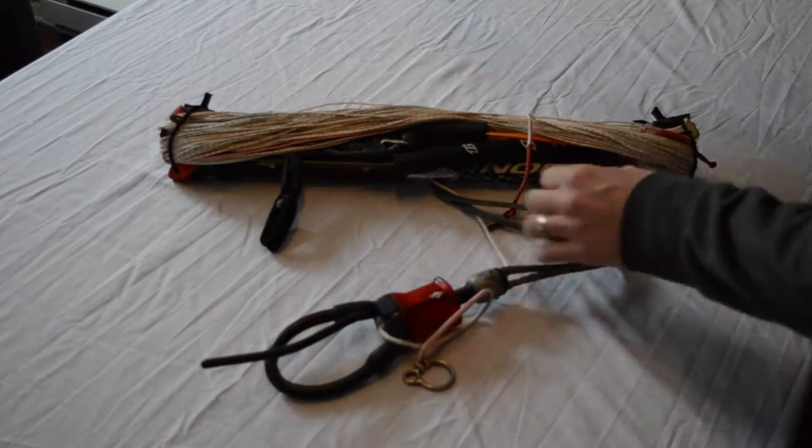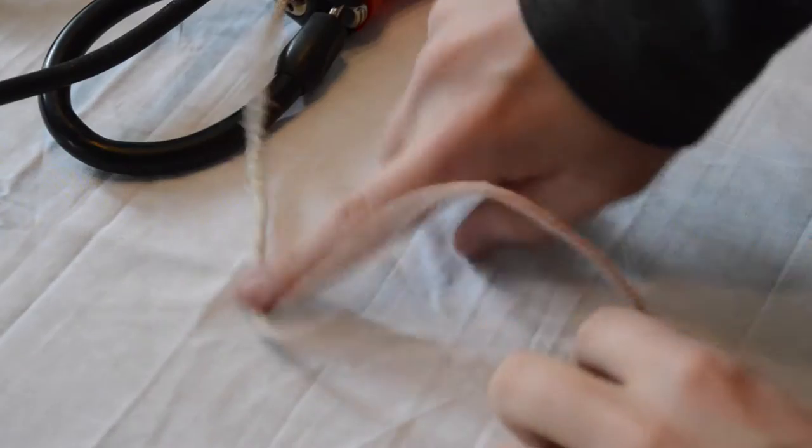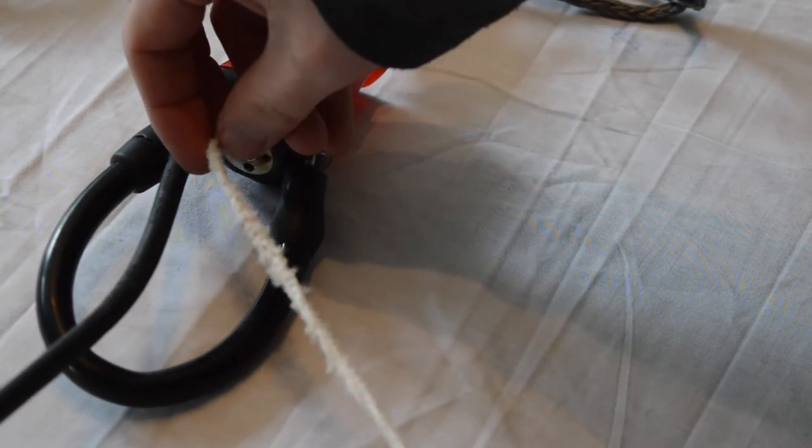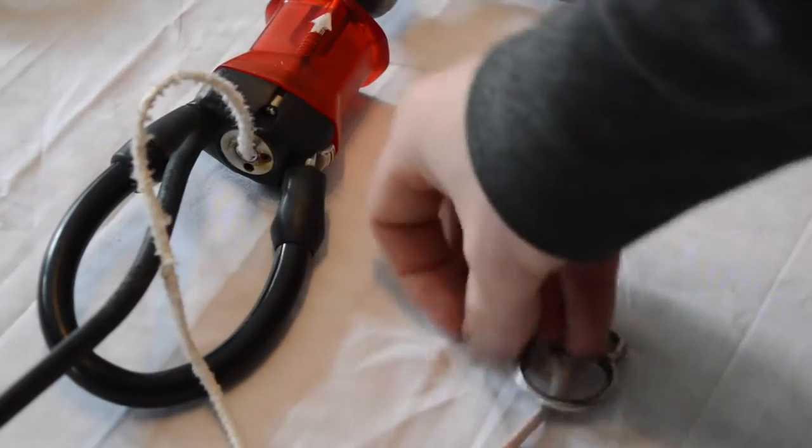So the line we're going to be replacing is the center line that runs up through your chicken loop that allows you to flag out when you release your safety system. As you can see it gets worn out pretty bad fairly quickly.